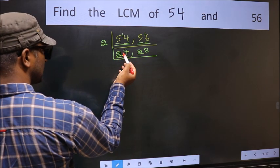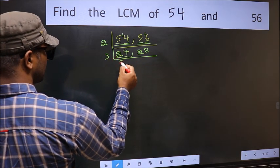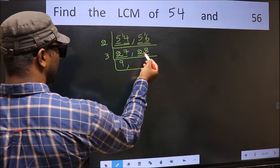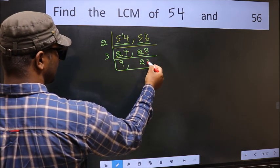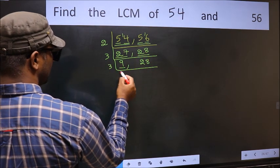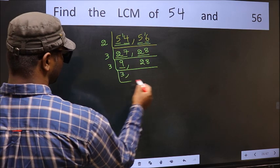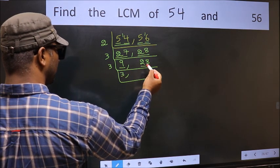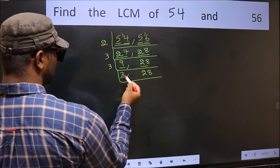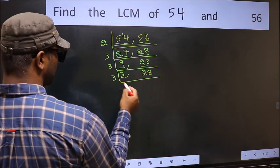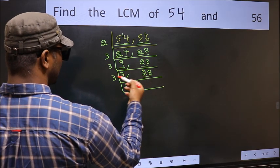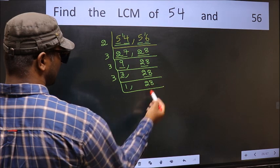Now here we have 27. 27 is 3×9 is 27. The other number 28 is not divisible by 3, so we write it down as it is. Now here we have 9. 9 is 3×3 is 9. The other number 28 is not divisible by 3, so we write it down as it is. Now here we have 3 — 3 is a prime number, so 3×1 is 3. The other number 28 is not divisible by 3, so we write it down as it is.